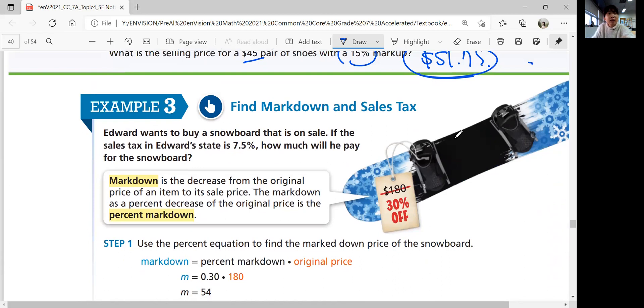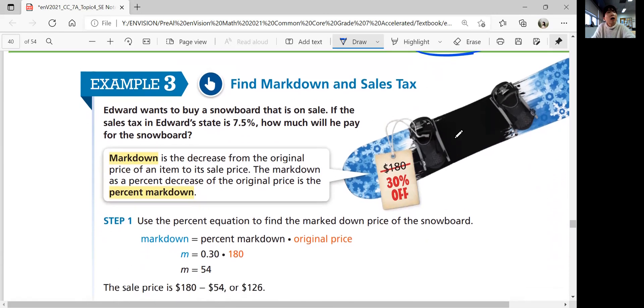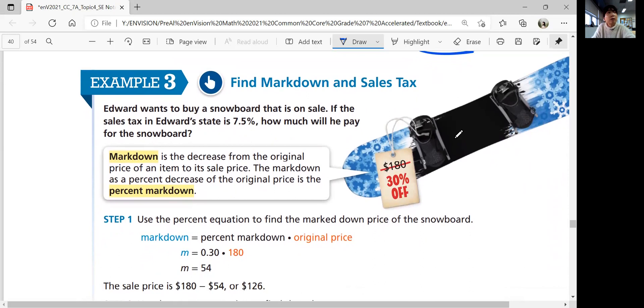Example three, find a markdown in sales tax. Sometimes things go on sale. Edward wants to buy a snowboard that is on sale. If the sales tax in Edward's state is 7.5%, how much will he pay for the snowboard? The selling price was $180, but it's going to be 30% off. That's a markdown. You need to figure out how much is the markdown price and subtract that from $180 to get the final sales price.